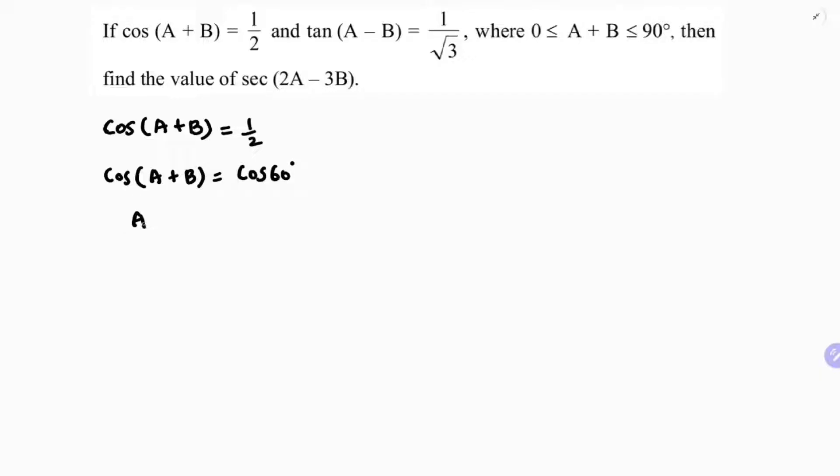On comparing, A + B is 60 degrees, equation 1. Now in the same way, tan(A - B) is 1 by root 3. So here also A minus B, so definitely 1 by root 3 will be a standard value. 1 by root 3 you will get for 30 degrees.